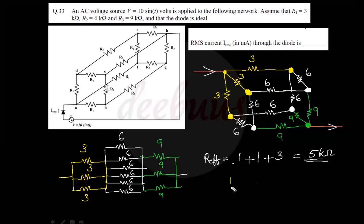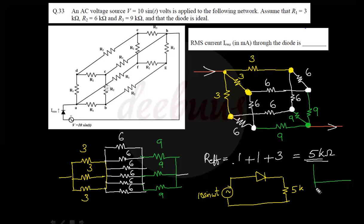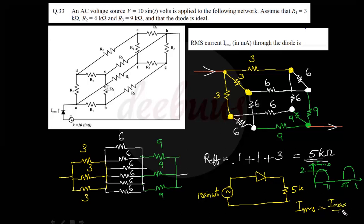The simplified circuit is a voltage source 10 sin(ωt), an ideal diode, and a 5 kΩ resistor — a half-wave rectifier. Maximum current = 10/5k = 2 mA. For a half-wave rectifier, I_rms = I_max/2 = 2/2 = 1 mA. So the answer is 1 milliampere.